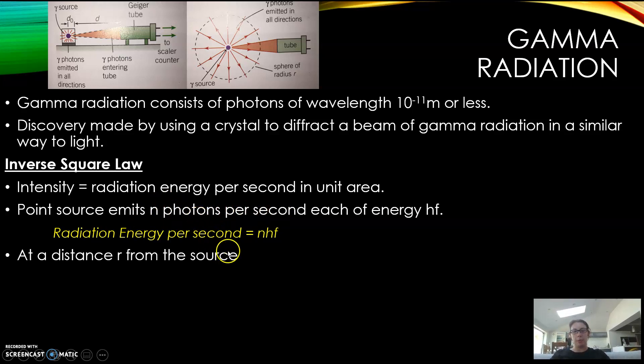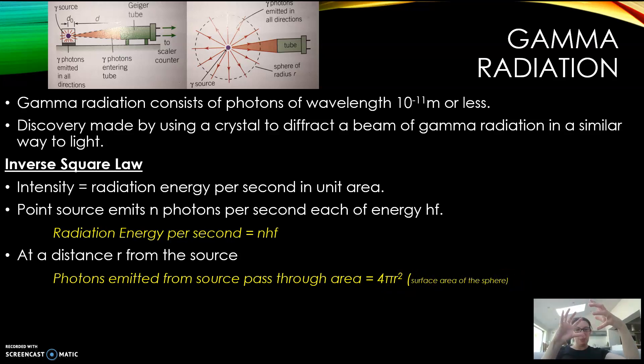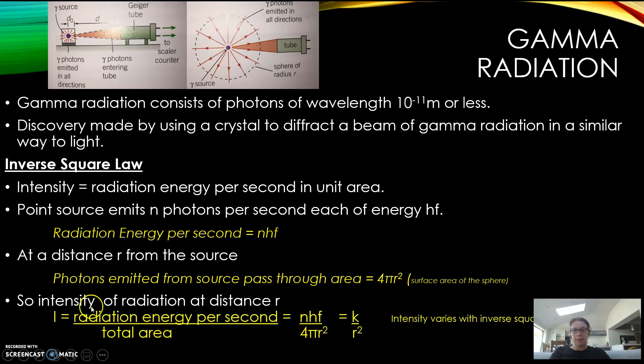That gives you the radiation energy per second, because n is the number of photons per second. If you move a distance r from the source, the photons emitted pass through an area of 4πr², which is the surface area of the sphere. The intensity is the radiation per second, so nhf, in unit area, so divided by 4πr².